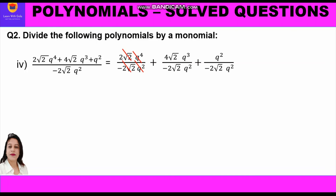Simplifying: for the first term, 2√2 cancels with 2√2 and q⁴/q² = q², with the minus sign giving -q². For the second term, 4/2 = 2 and plus × minus = minus, q³/q² = q, giving -2q. For the third term, q² cancels with q², leaving -1/(2√2). The final answer is -q² - 2q - 1/(2√2).